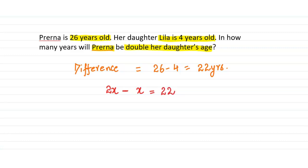So that means this will happen when Lila is 22 years old. When will Lila be 22 years old? Right now she's 4 years old, so she will be 22